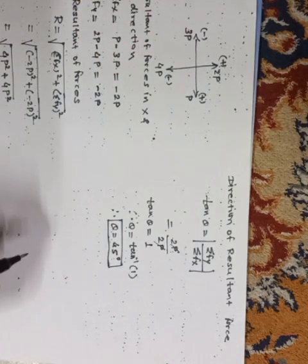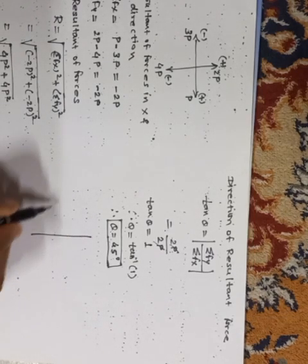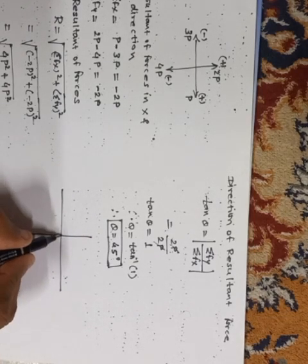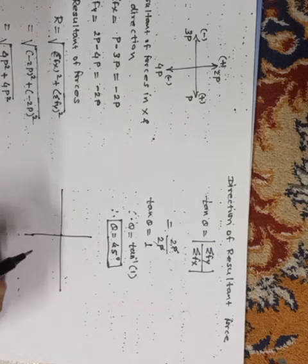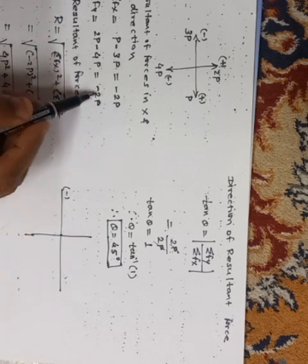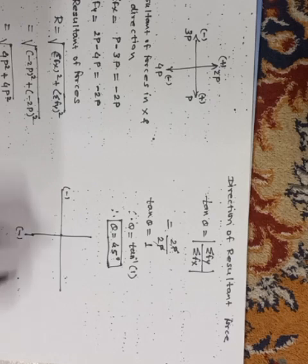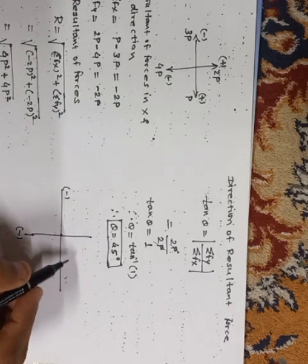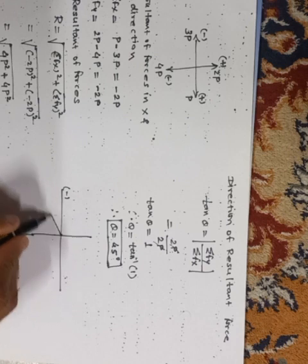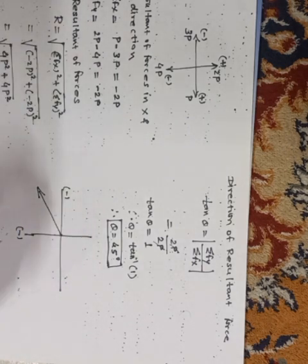Now, it has been asked to show the position. So, just draw a quadrant system, and we know our both the forces, summation of forces are minus. So, your resultant force lies in third quadrant, and this is your R, that is 2.82P.